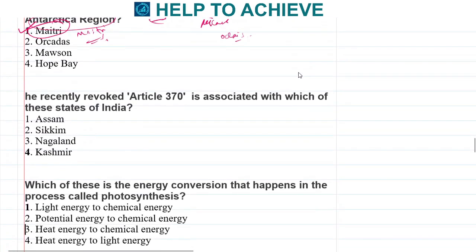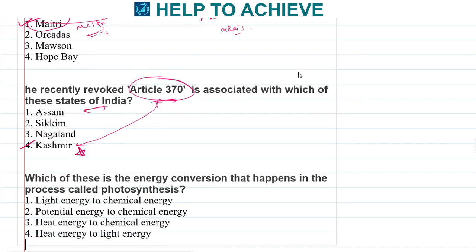Recently we have heard about the famous Article 370. This Article 370 was associated with which state? Article 370 was with Kashmir, we all know that.